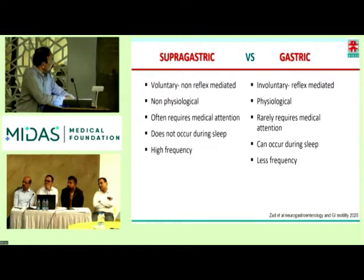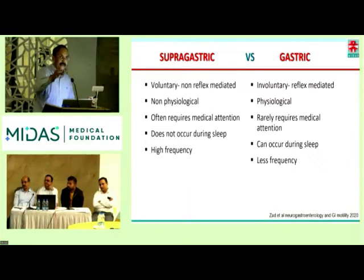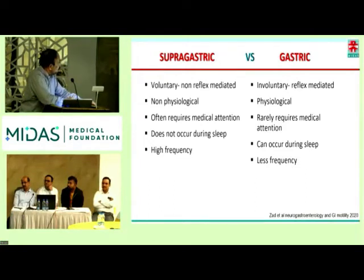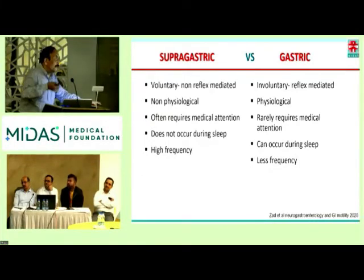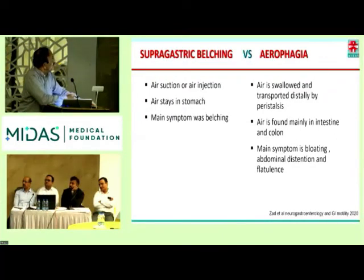Supragastric belching does not occur during sleep. When you have patients coming to OPD with continuous belching, immediately diagnose it as supragastric belching — an anxiety disorder. If you talk to the patient, the belching will stop. It does not occur during sleep. It is high frequency — within a minute the patient will belch 10 to 15 times. Gastric belching is less frequent.